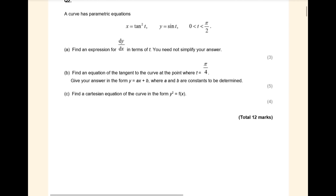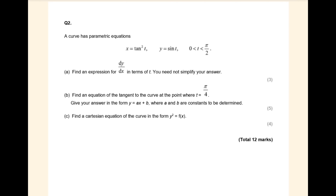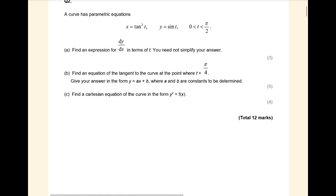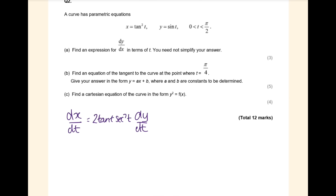First question done. Okay, parametric equations - there was no sight of them, so they're almost certainly going to come up. Also differentiating trig didn't really come up, so I've combined the two here. So dy/dx: the way you do that with parametric equations is you find dx/dt and you find dy/dt, and then you use the chain rule to combine them. When you differentiate tan²t you get 2 tan(t) sec²(t). And when you differentiate sine, you get cos.